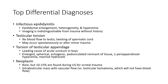Top differential diagnoses. Infectious epididymitis: epididymal enlargement, heterogeneous echotexture, and hyperemia — imaging is indistinguishable from trauma without history. Testicular torsion: no blood flow to testis, swelling of the spermatic cord, may occur spontaneously or after trauma. Torsion of testicular appendage: leading cause of acute scrotum in boys — enlarged, spherical, echogenic, pedunculated remnant of tissue, with possible reactive hydrocele. No neoplasm — rare but 10 to 50 percent formed during autopsy. Scrotal neoplasm: intratesticular mass with vascular flow, versus testicular hematoma which lacks blood flow.